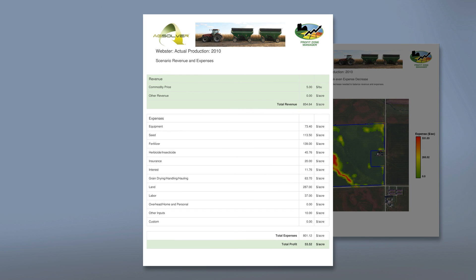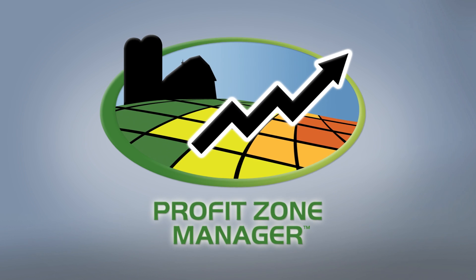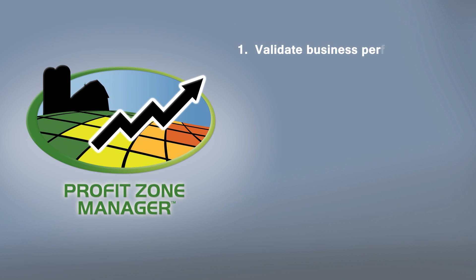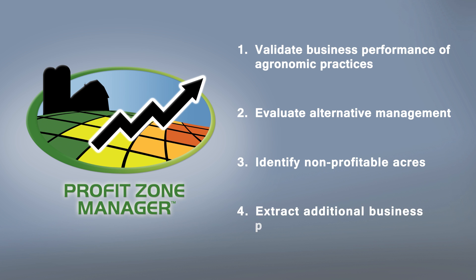Precision business planning simultaneously improves business, agronomic, and environmental performance. Making profit zone manager your precision business planning tool provides several opportunities: validate your agronomic management decisions are delivering the business performance you expect, evaluate the business performance of alternative agronomic managements in your fields, identify consistently non-profitable acres, evaluate the business performance impact of alternative management systems on those acres, and extract additional business performance information from the precision data systems you're paying for.